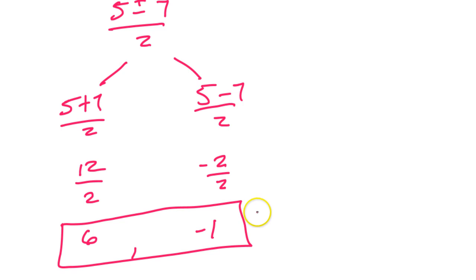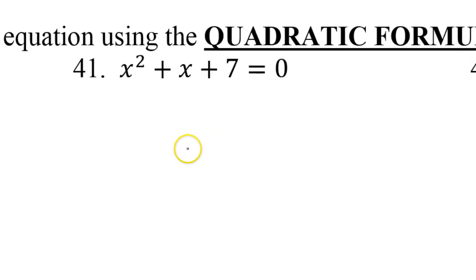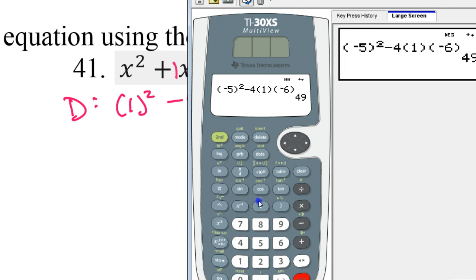How about number 41? This one's already in the right order, so I don't have to move anything around. So I'm just going to go ahead and find the discriminant. So the discriminant, b is 1, so I'm going to do b squared minus 4ac. And again, there's nothing to stop you from just putting that in your calculator. So b squared minus 4. What was c? 7. So negative 27. Did everyone get negative 27 for your discriminant?